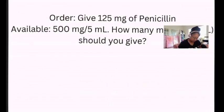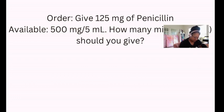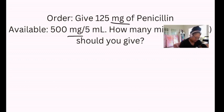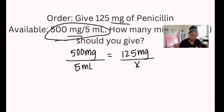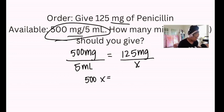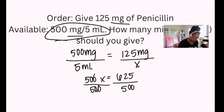Let's try another one. The order is 125 milligrams of penicillin, and what's available is 500 milligrams per 5 mLs. How many mLs should you give? The units are already the same, so we set up: 500 milligrams per 5 mLs equals 125 milligrams over X mLs. We cross multiply and then divide both sides by 500 to isolate X, and X equals 1.25 mLs.